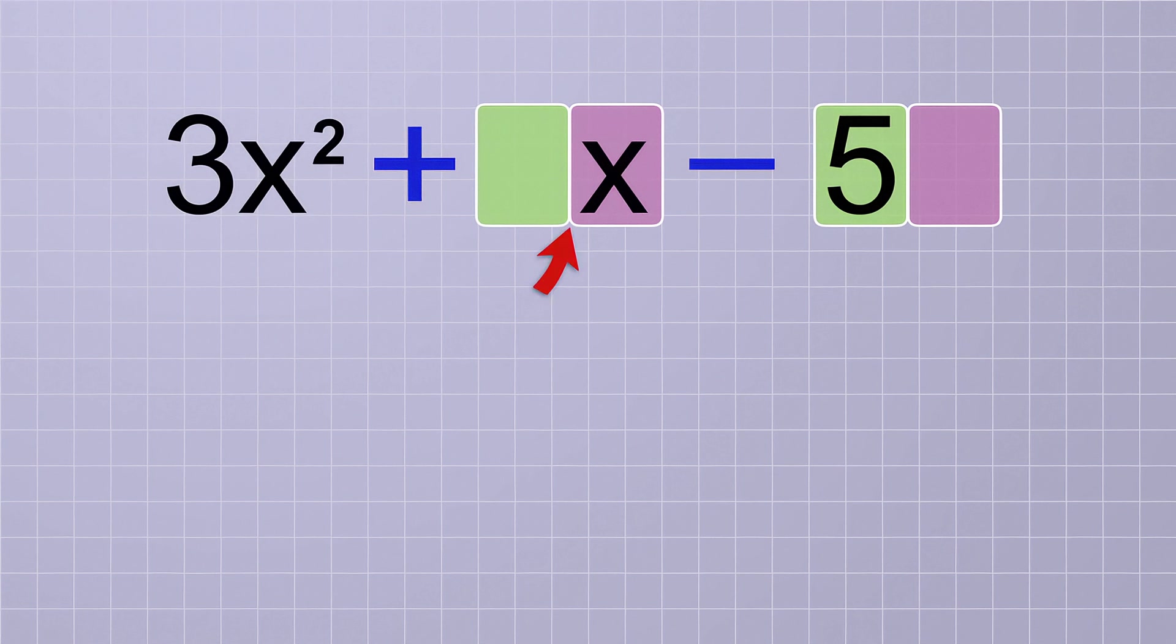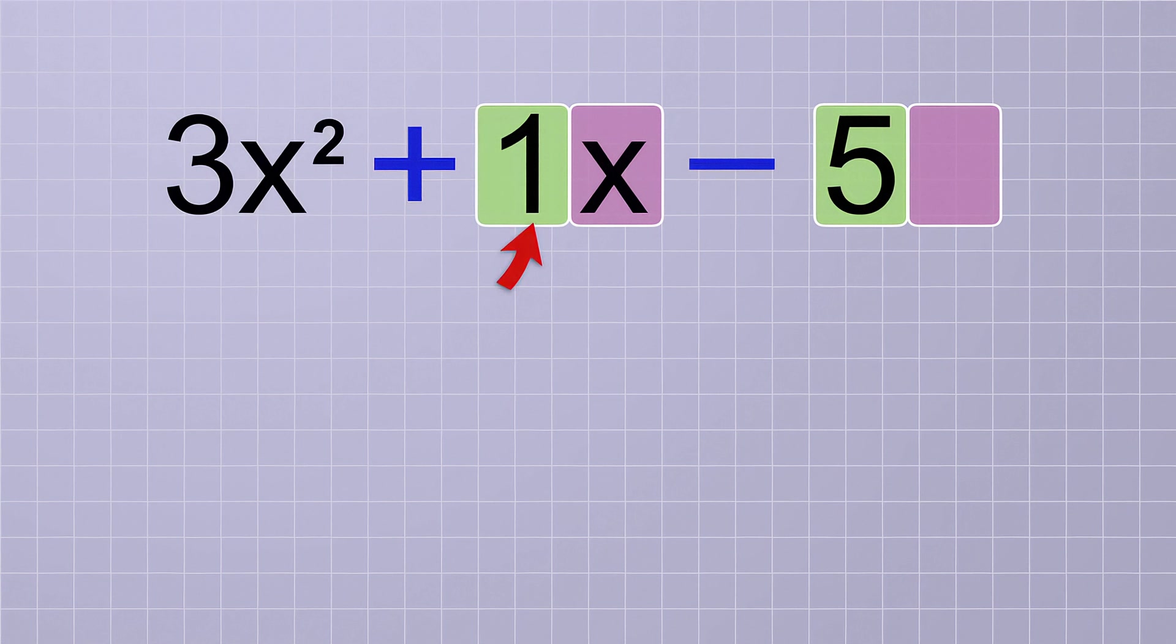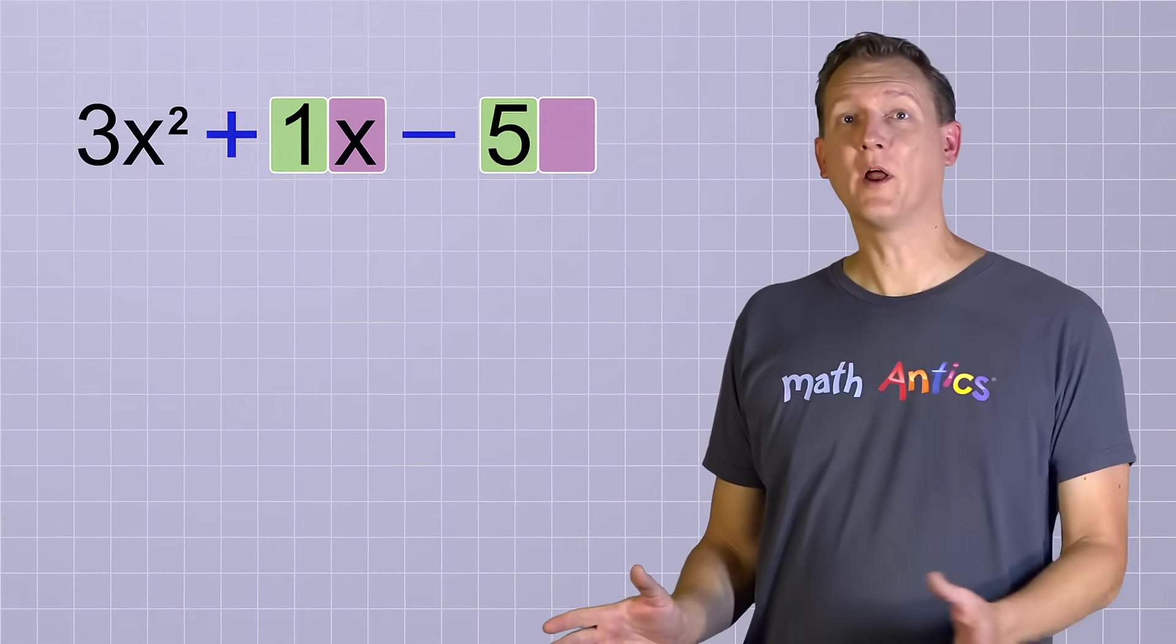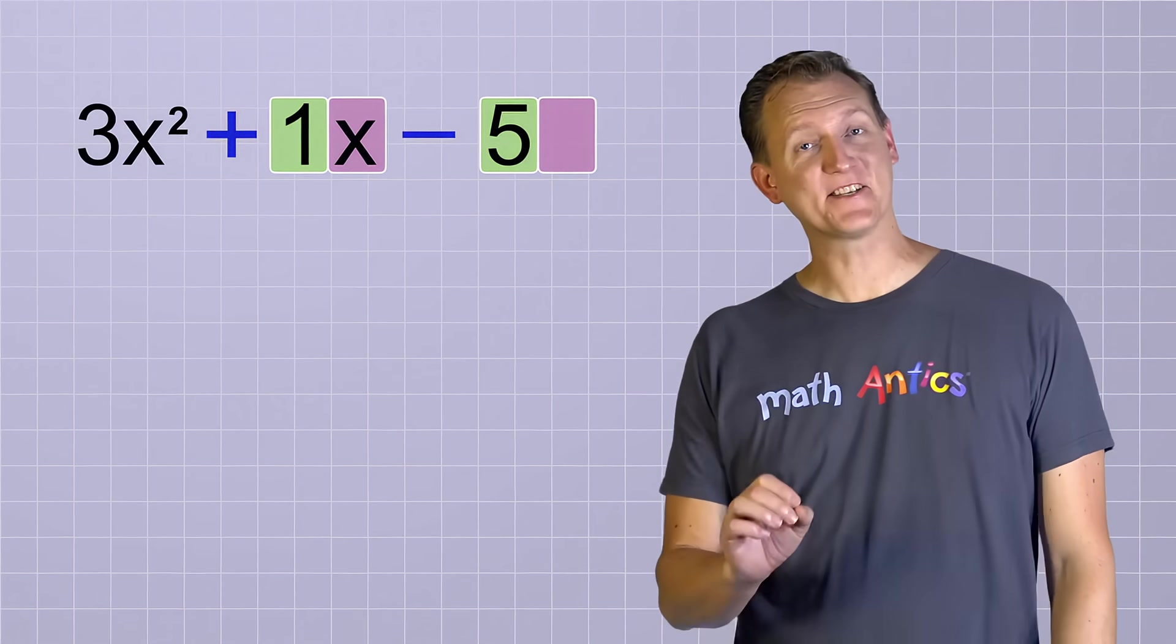Well, the middle term is easy to explain. There really is a number part there, but it's just 1. Do you remember how 1 is always a factor of any number? But since multiplying by 1 has no effect on a number or variable, we don't need to show it. So if you see a term in a polynomial that has only a variable part, you know that the number part of that term is just 1. Okay, but what about this last term that's missing its variable part? Well, that's a little trickier.